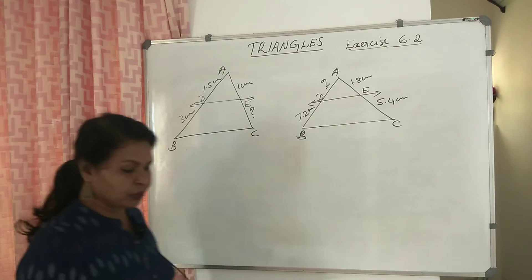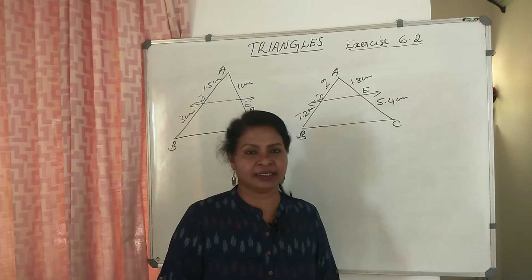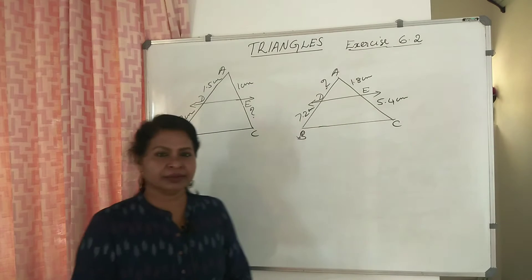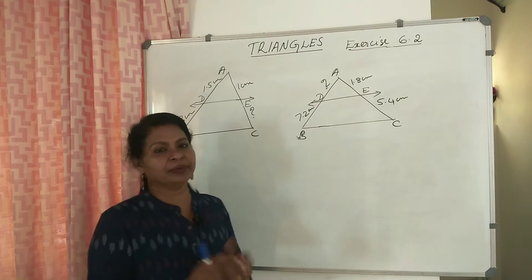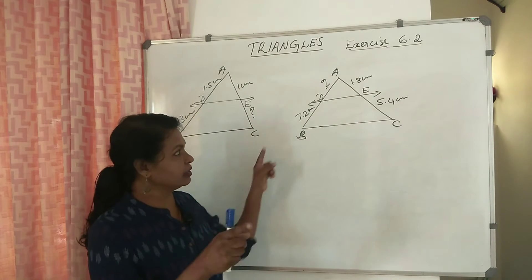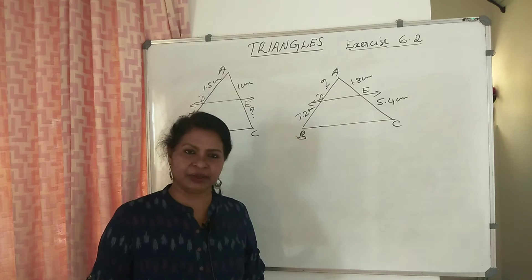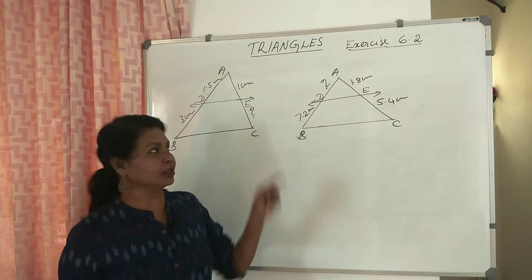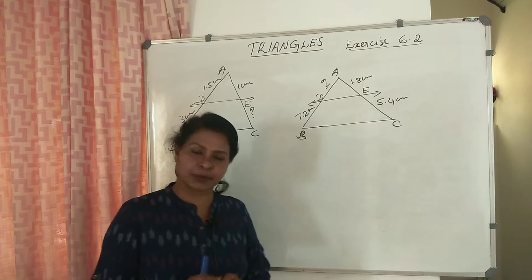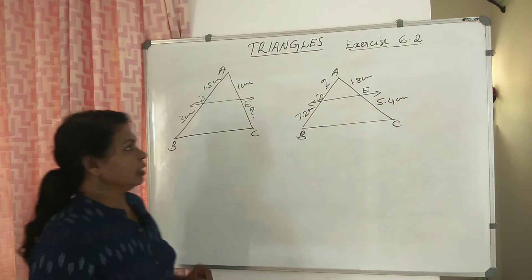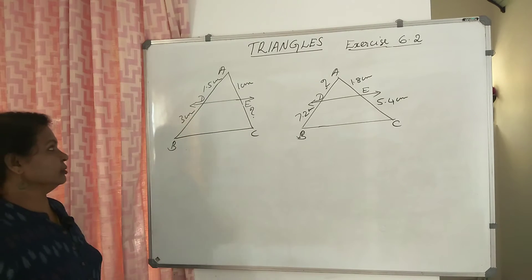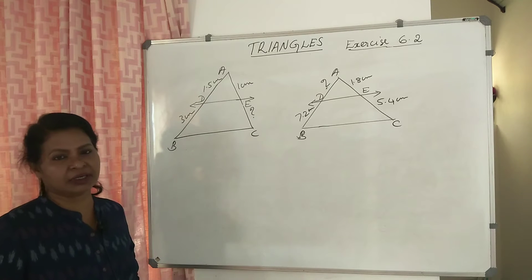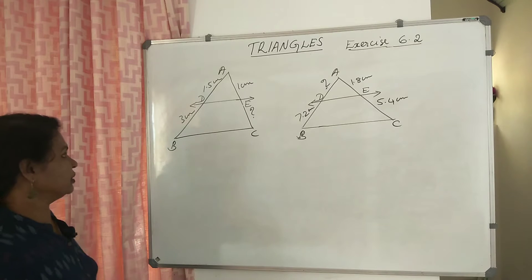Let's explain the Basic Proportionality Theorem. In a triangle, when a line is drawn parallel to one side, we divide the other two sides. We will answer the questions in Exercise 6.2. The first question is: DE parallel to BC. It is solved with BPT.